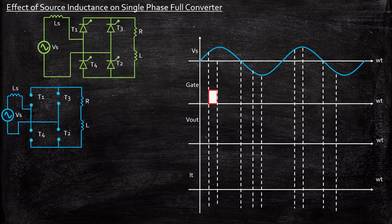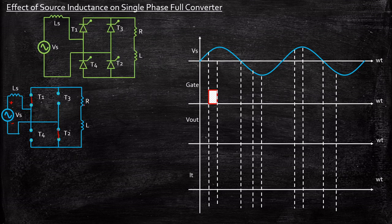Let's consider the circuit diagram. The source voltage, that is the supply voltage, is going in the positive direction — supply voltage is plus and minus. So T1 is forward biased because plus is connected to the anode of T1, and minus is connected to the cathode of T2, so T2 is also forward biased. We are also applying a gate pulse, so ideally we expect thyristors T1 and T2 to start conducting. The current will be flowing through this path and we'll be getting an output voltage.